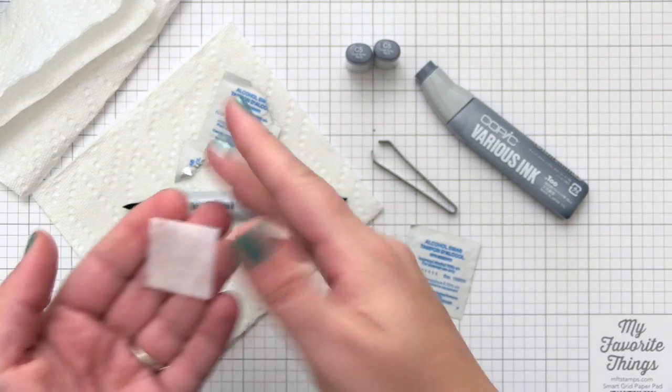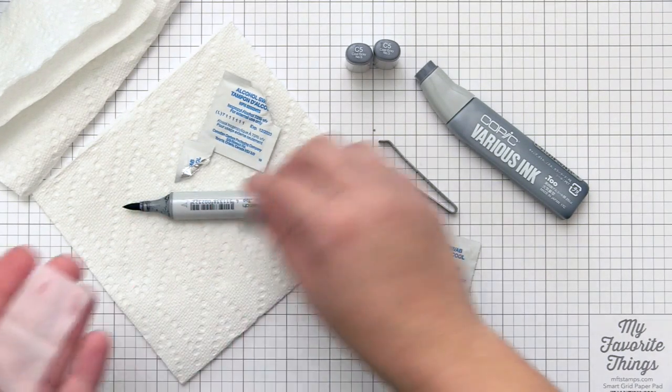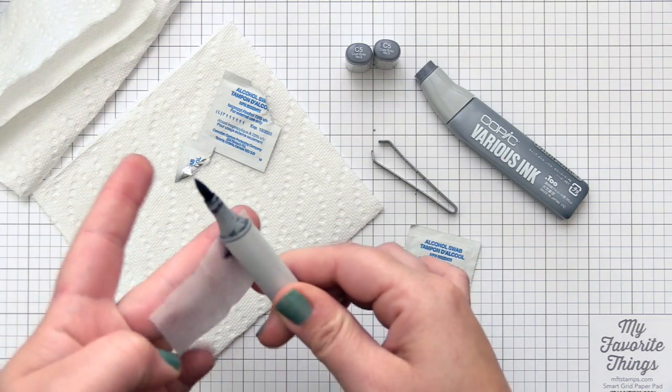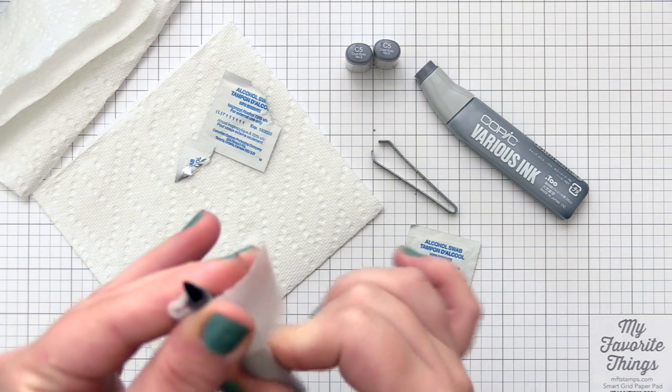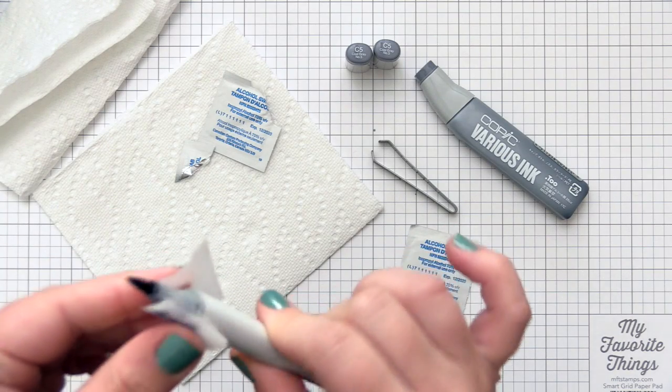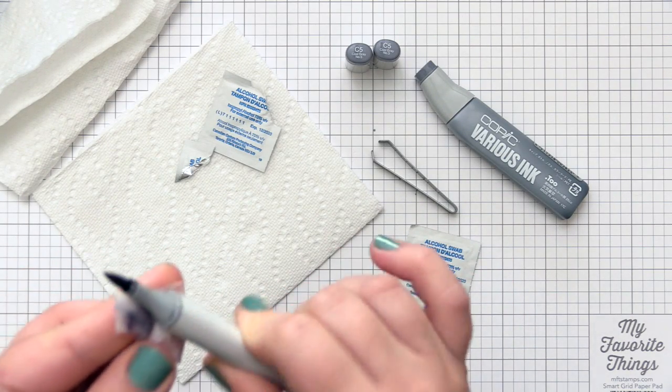Once I've finished filling and put my nib back in, I'm good to go and can do some cleaning. You can see the tip is pretty messy from a lot of use. I like to take these alcohol swabs and wipe them around the barrel of the marker to do a little cleanup.